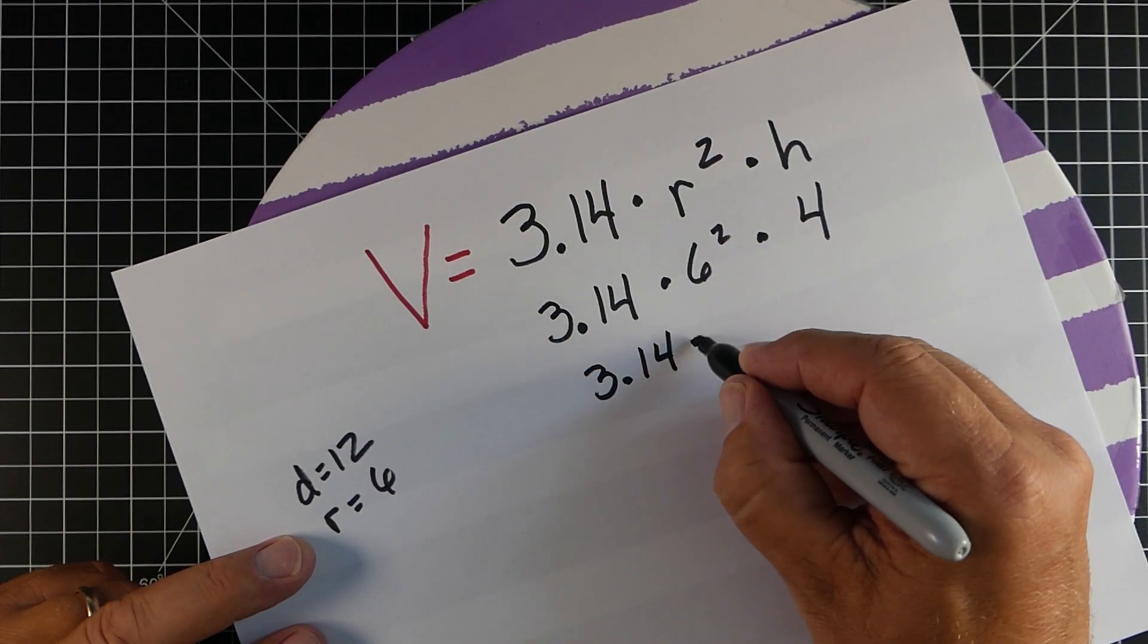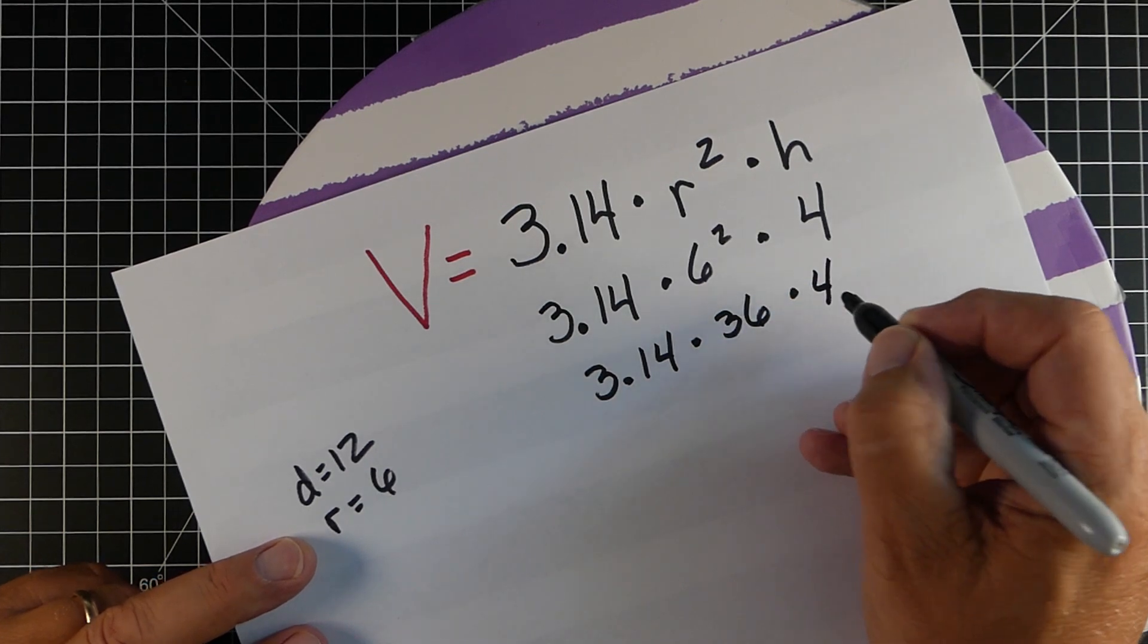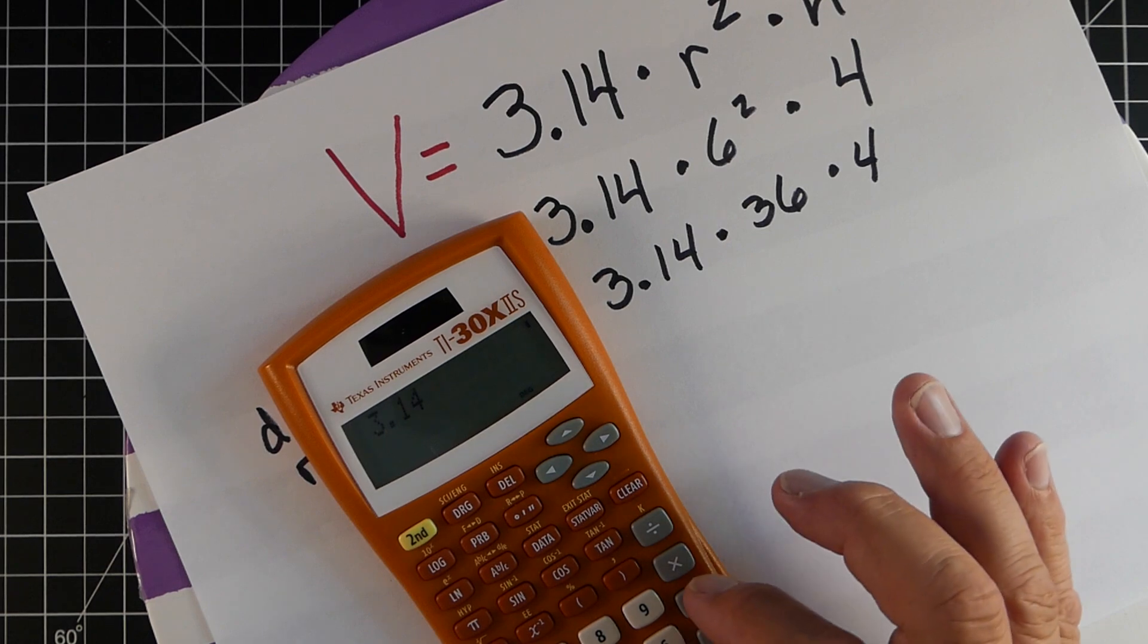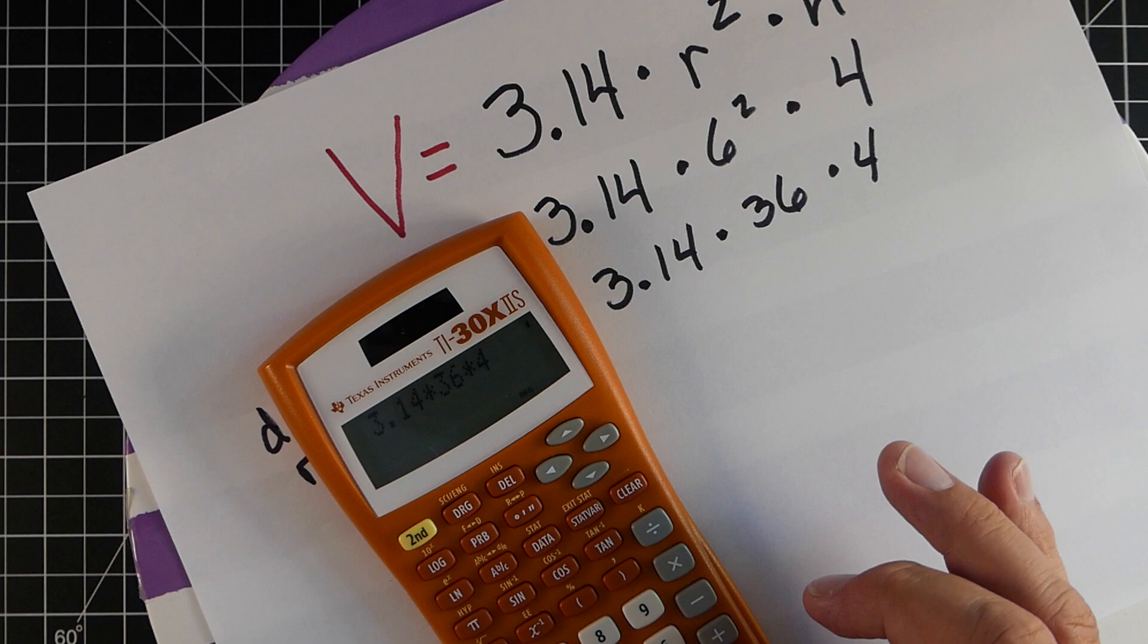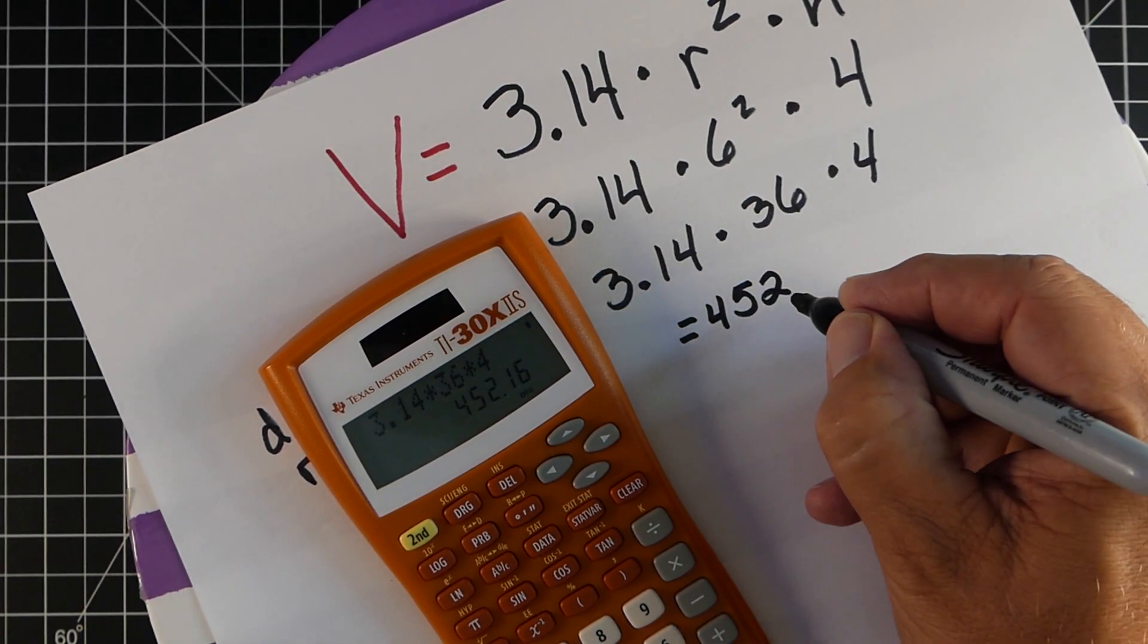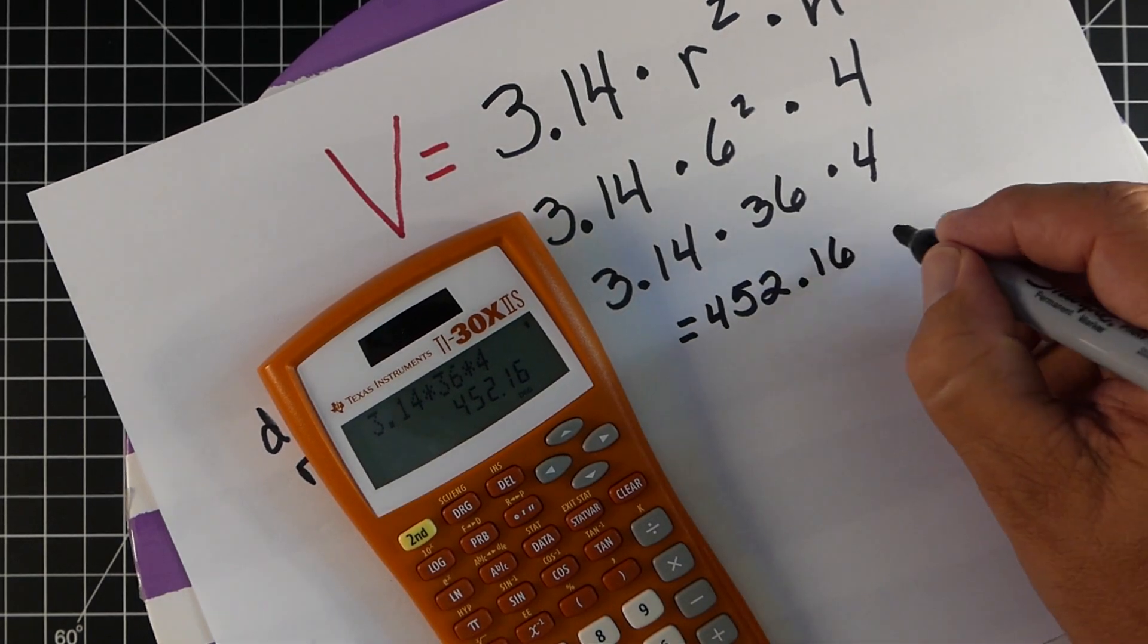And so, what I could do first is just do the 6 squared, because I can kind of do that in my head. 6 times 6 is 36. And at this point, I'm just going to go ahead and use the calculator to make it a little quicker and easier. So, we just go 3.14 times 36 times 4. And that gives us 452.16. And then that would be inches cubed.